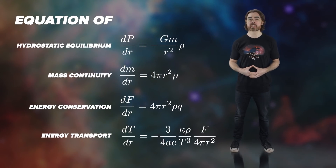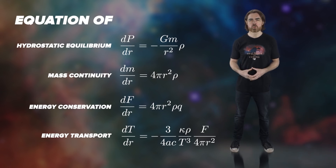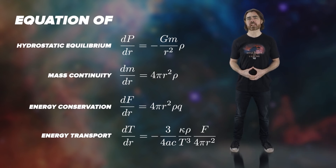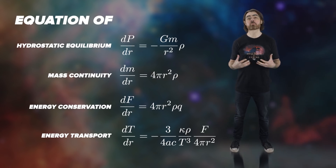Stars are among the best understood objects in astrophysics. This is impressive given the fact that they are impossibly distant opaque balls of fiery plasma. Yet mathematical models emerged in the early 1900s that describe the balance between the gravitational crush and the outward flow of energy from the fusion reactions in the core. These equations of hydrostatic equilibrium allow us to calculate things like the density and temperature of the core, the way energy flows to the surface, and even the lifespan of stars. These models are largely built around what little we can learn from the light we receive directly from the surface of stars.